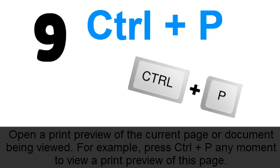9. CTRL plus P. Opens a print preview of the current page or document being viewed. For example, press CTRL plus P any moment to view a print preview of this page.